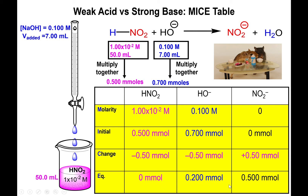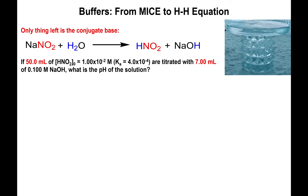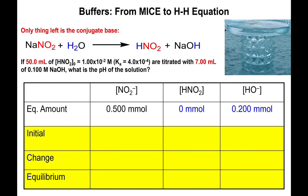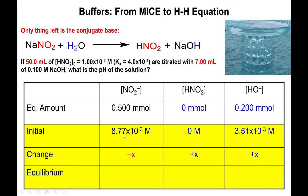You have excess hydroxide left in solution. Switching back to a base dissociation ICE table: nitrite plus water gives HNO₂ and hydroxide, with an initial amount of excess hydroxide and the nitrite produced during titration. Dividing both by the total volume of 57 mL gives concentrations of 8.77 × 10⁻³ M for nitrite and 3.51 × 10⁻³ M for hydroxide.